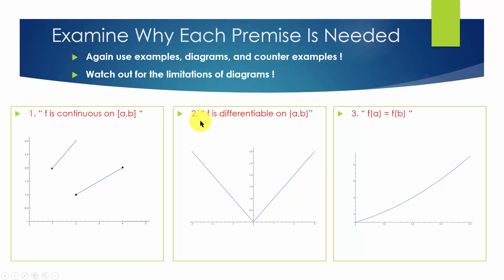The second premise is that f is differentiable on open interval (a, b). Here again, we are showing a function f equals the absolute value of x. This function meets the first and third premises. It is continuous on closed interval [a, b], and f(a) equals f(b).